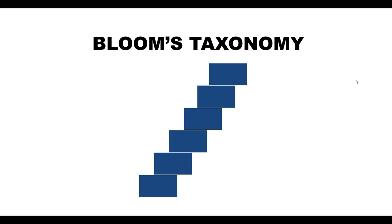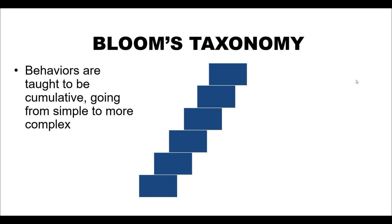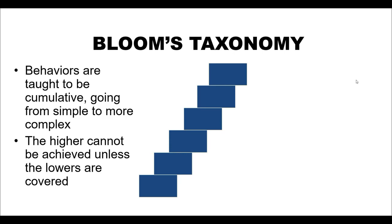Let's proceed to the next slide. Here you can see an image with step-by-step stairs. According to Benjamin Bloom, behavior also progresses step by step. Behavior is cumulative — you progress from the lower level towards the higher one, and you cannot skip any of the steps if you want to achieve the top. A child cannot start running unless it passes through the stages of sitting, standing, and then walking.